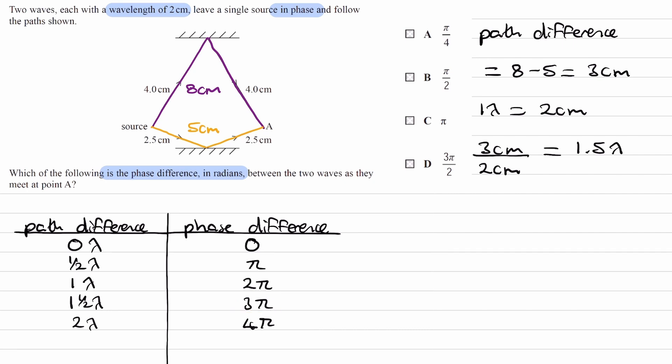But when it comes to phase difference, you can always take away integer multiples of 2π to get your phase difference in an interval of 0 to 2π.